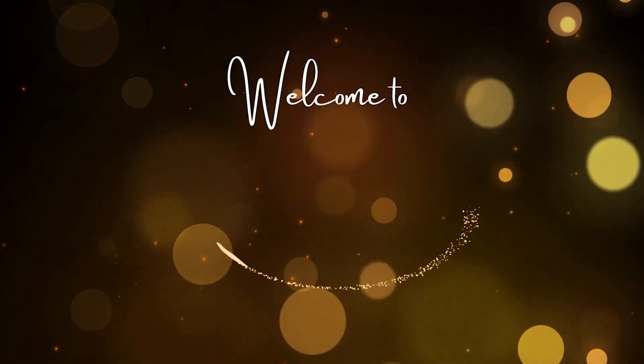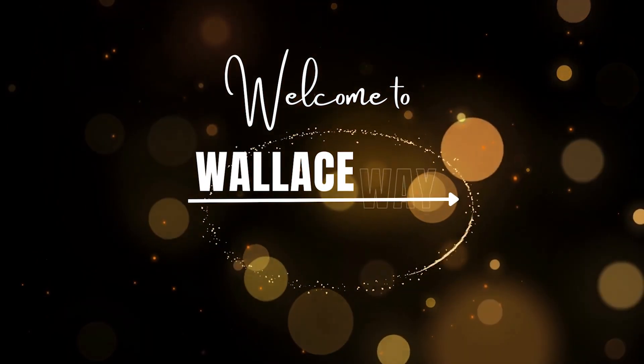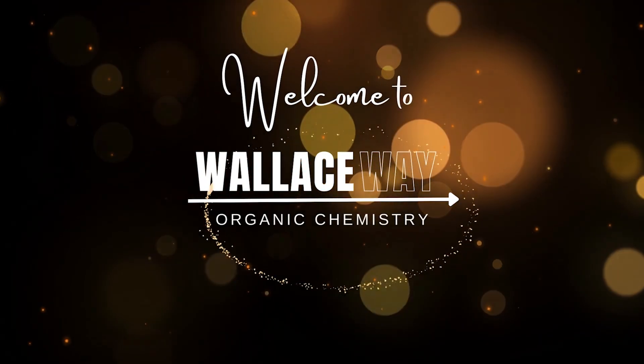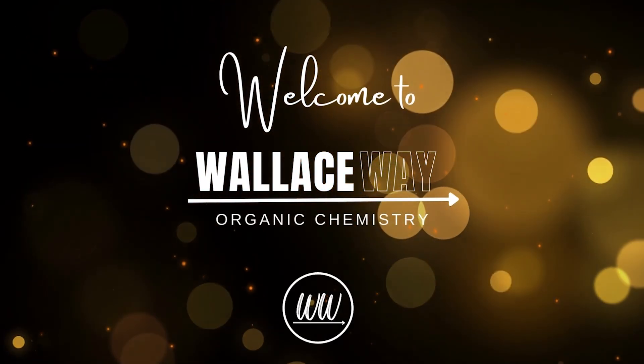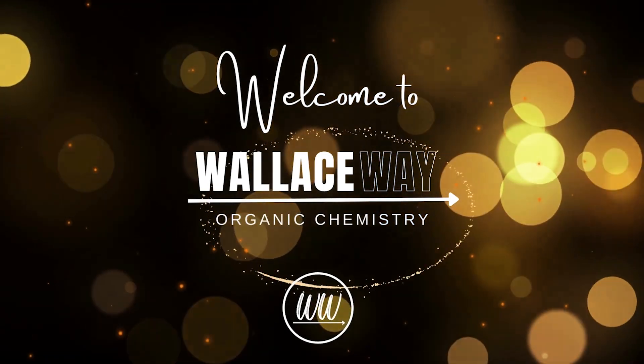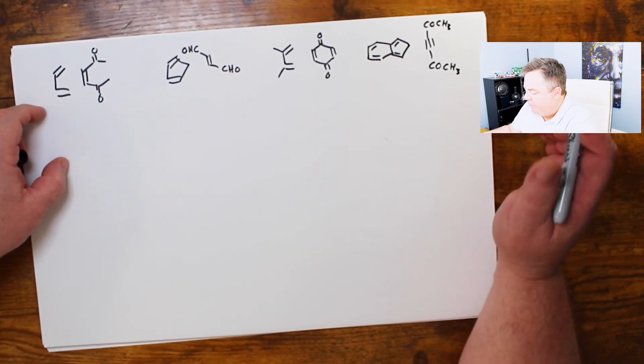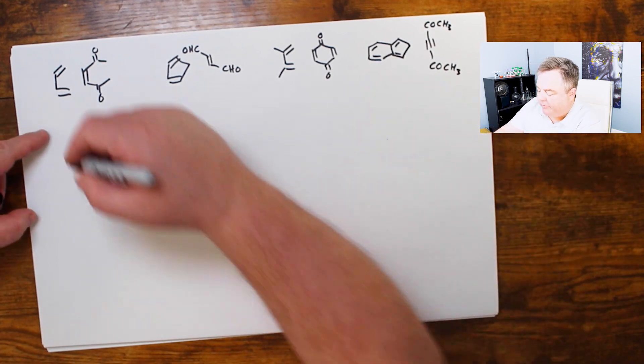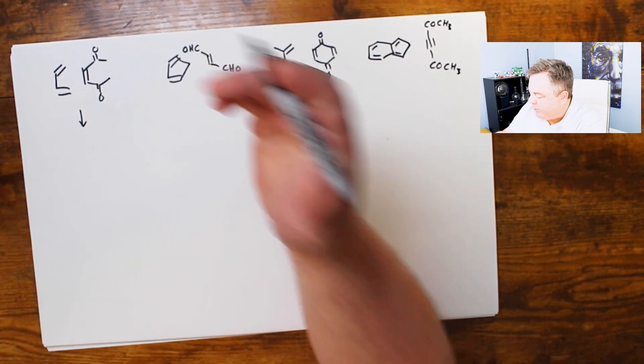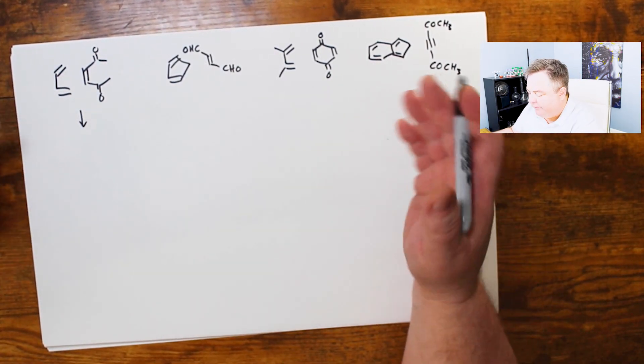Let's solve some Diels-Alder problems. Let's jump right in. So here are four different Diels-Alder reactions and we want to see what the products would be. I'll just work through them so you can see how it works through some of these problems.